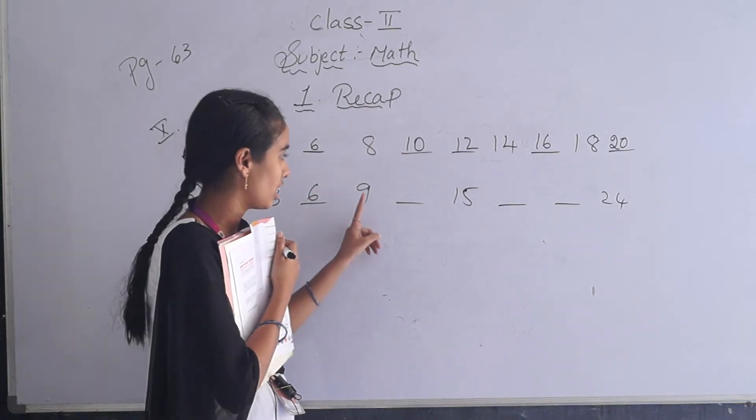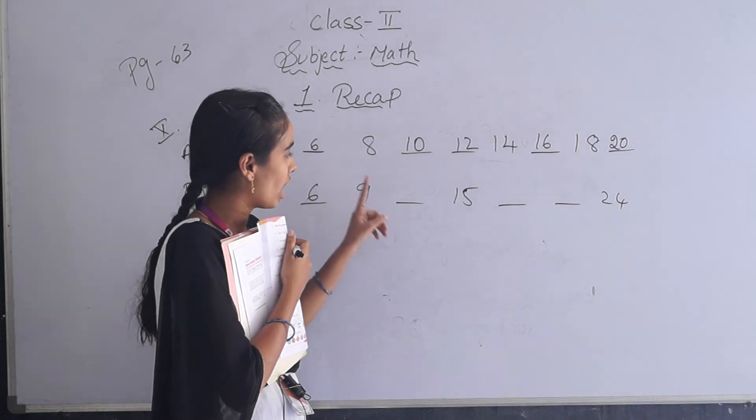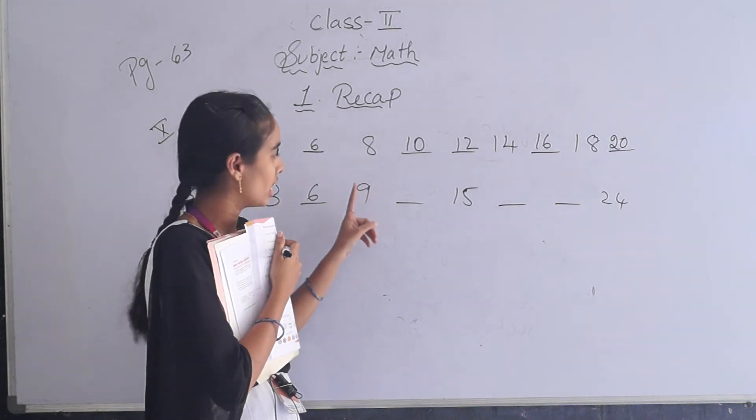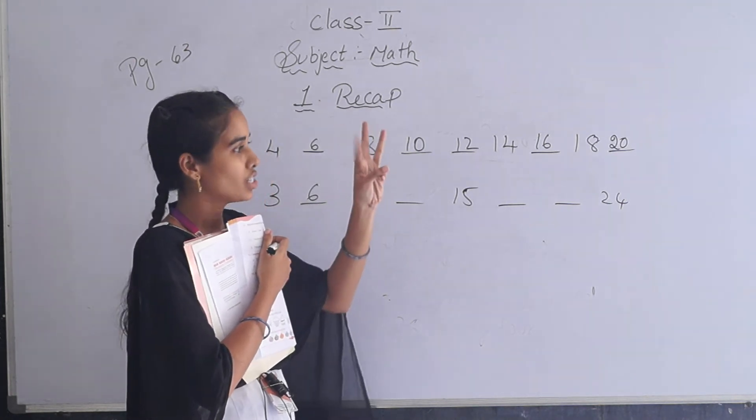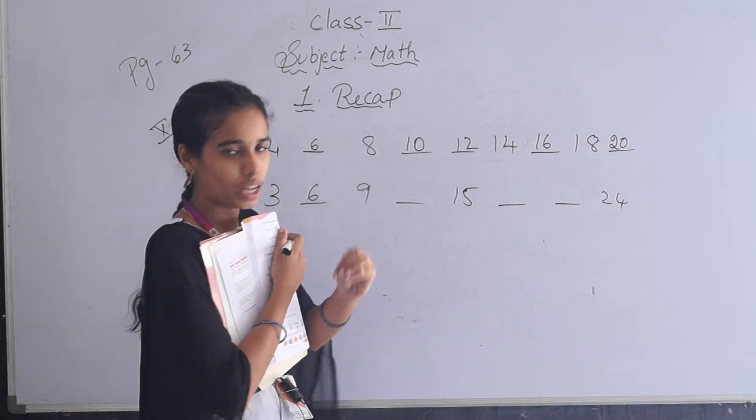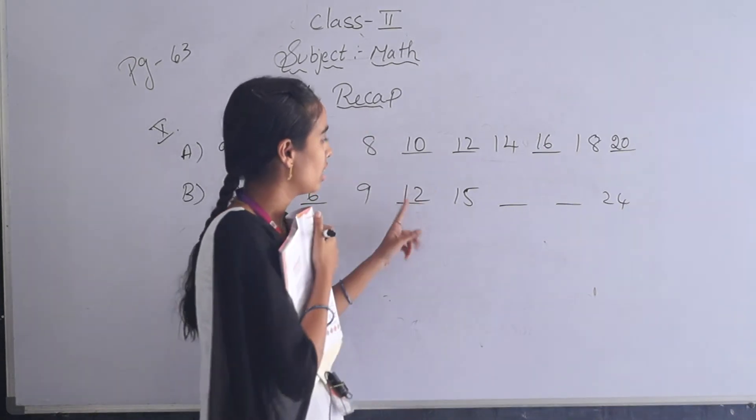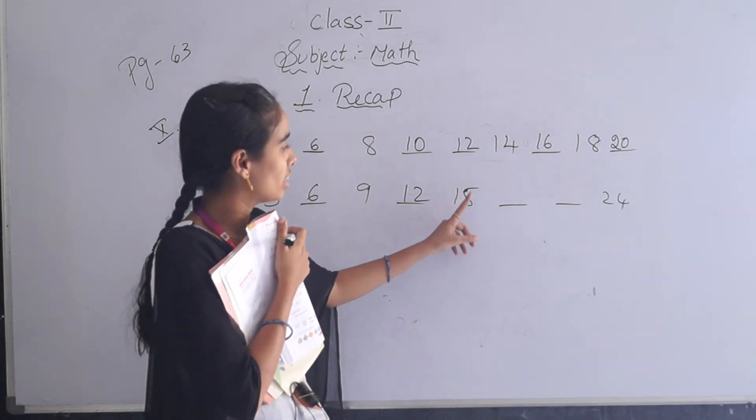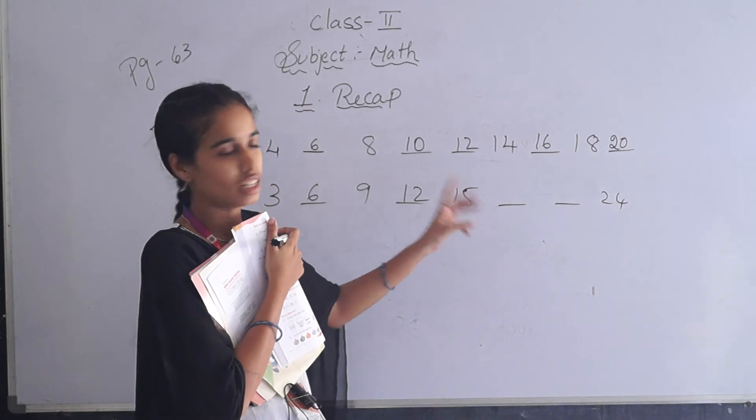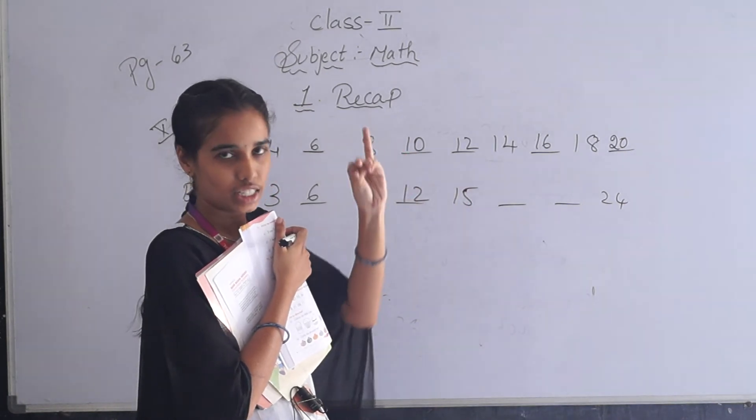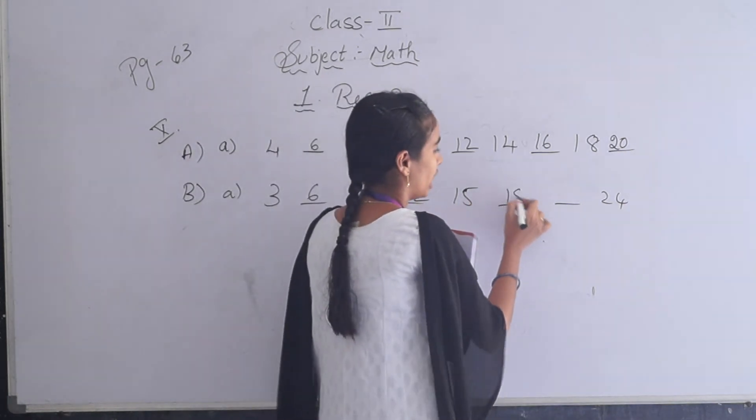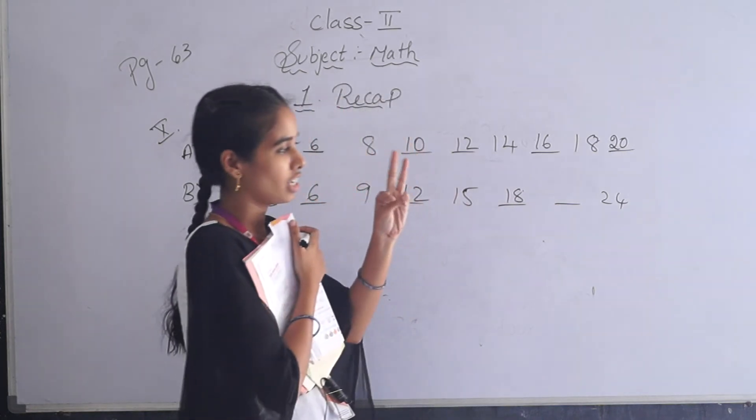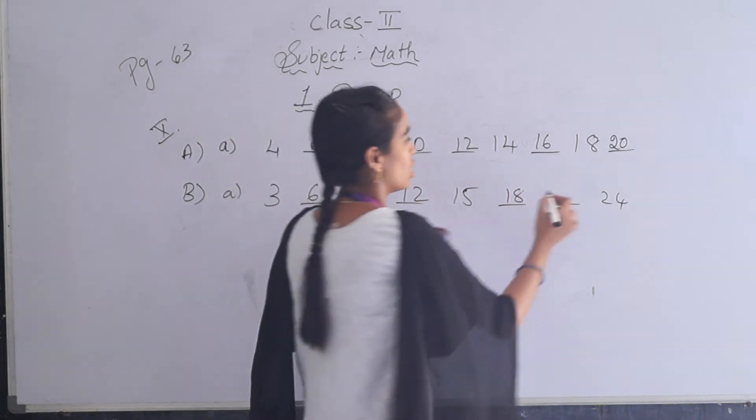Next, 6 plus 3 is 9. Again, you have to add 3 to this number. 9 plus 3 is 10, 11, 12. So answer is 12. 12 plus 3 is 15. So add 3 to this number. 15 plus 3: 16, 17, 18. 18 plus 3: 19, 20, 21.